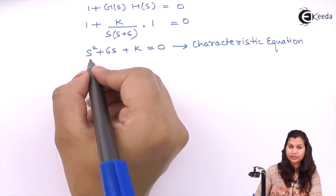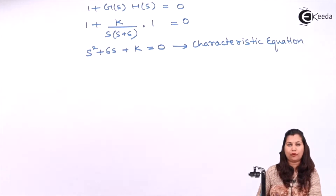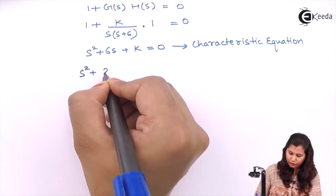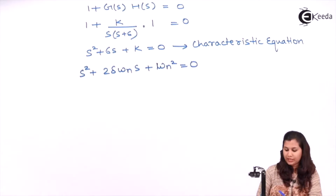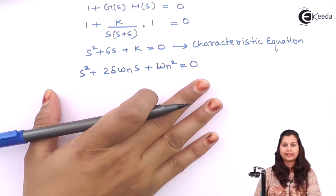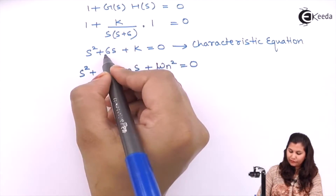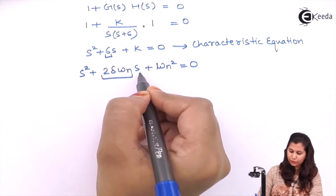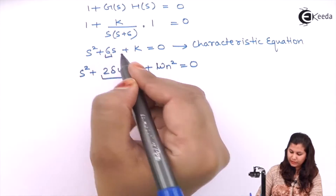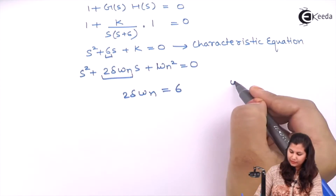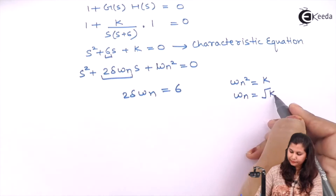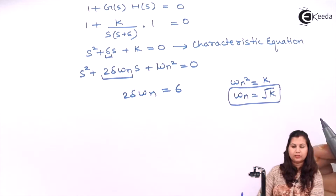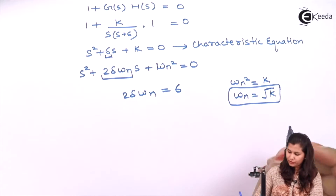Now compare this characteristic equation with the generalized standard form of the characteristic equation of a second-order control system: s² + 2·delta·ωn·s + ωn² = 0. Comparing coefficients, the coefficient of s gives 2·delta·ωn = 6, and ωn² = k, so ωn = √k.